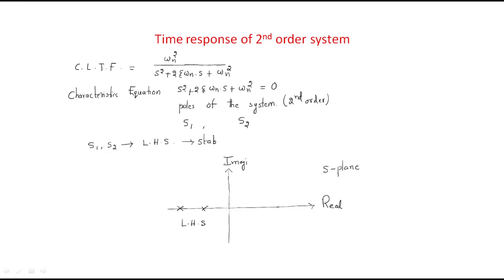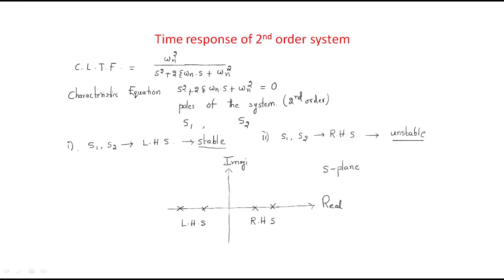Otherwise, if these two poles are available on the right side of the s-plane — s1 and s2 on the right hand side — then the system is called an unstable system. So these characteristics of the poles decide the system stability: whenever the poles are in the left half of the s-plane the system is stable, whenever the poles are in the right half the system is unstable.